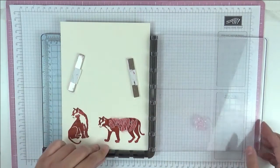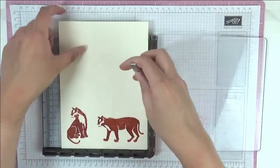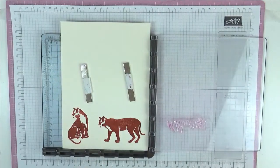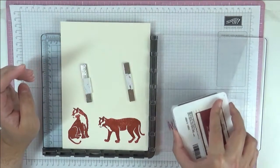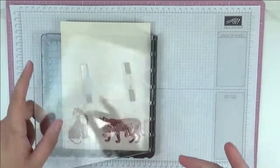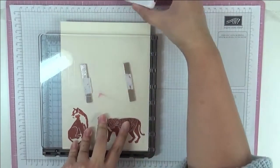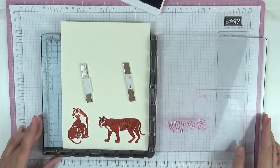Pick that up as well. Make sure our paper is in the corner. And we're going to stamp in Merry Merlot ink. I'm matching the colors in the designer series paper that goes with this bundle. Press that down. Yay. And there's our tiger.